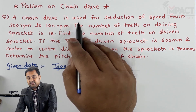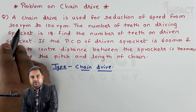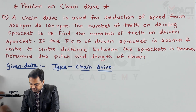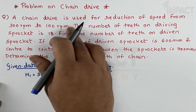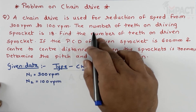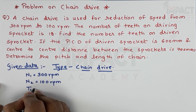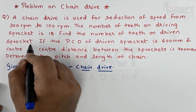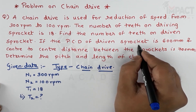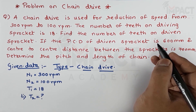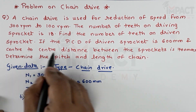The chain drive is used for reduction of speed. The first speed is 300 rpm, denoted as n1 — the speed of the driving sprocket. Then n2, the speed of the driven sprocket, is 100 rpm. The number of teeth on the driving sprocket is 18, denoted as t1. The number of teeth on the driven sprocket is t2. The PCD of the driven sprocket is denoted as d2.